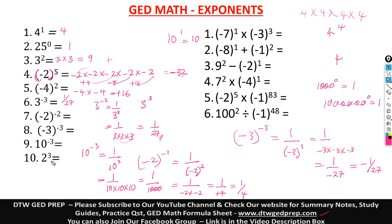Here's a review: 2 raised to the power of 3 is 2 times 2 times 2. Two times 2 is 4, and 4 times 2 is 8. So our answer is 8.